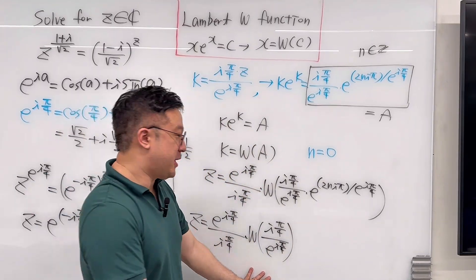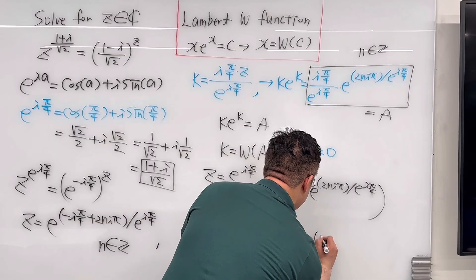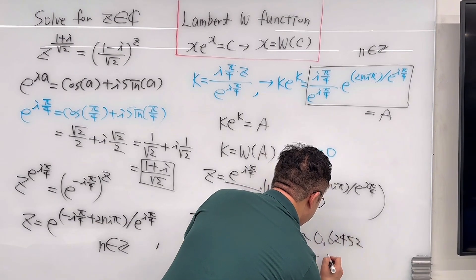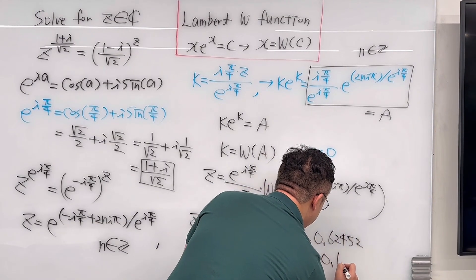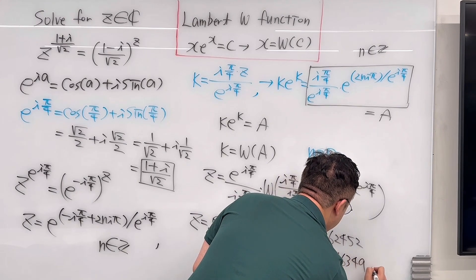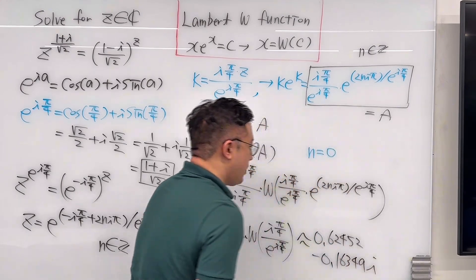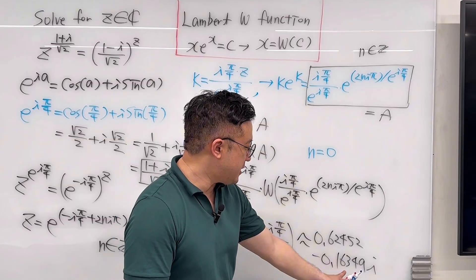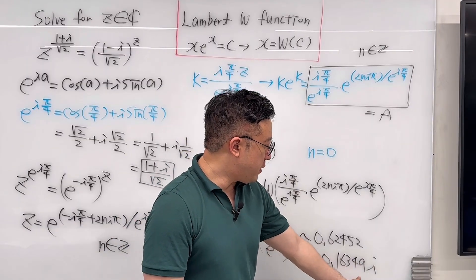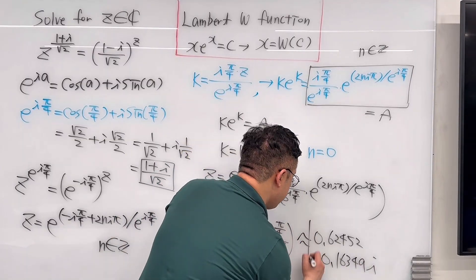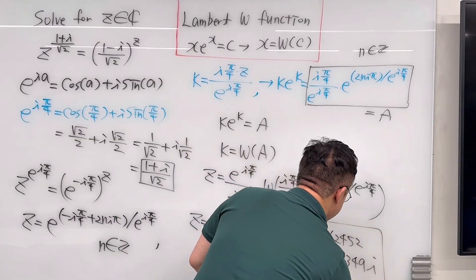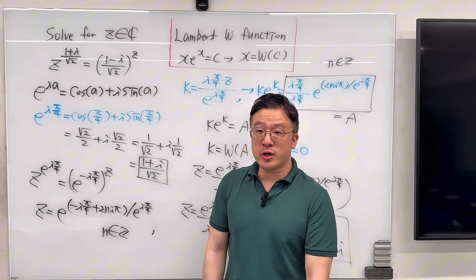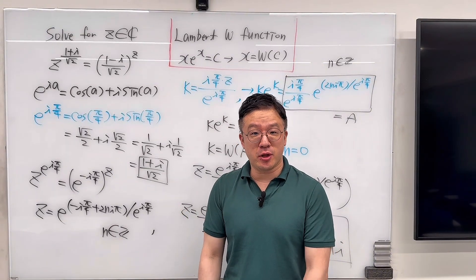And if you estimate this numerically, you get approximately 0.62452 minus 0.16349 times i. That's a pretty interesting viewer-suggested question using the Lambert W function — how amazing!